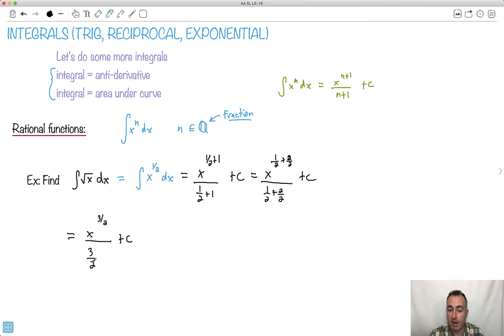What happens when I divide by a fraction? I can multiply by the reciprocal. So I'll put the 2 on top, the 3 on the bottom, and I have x to the power of 3 halves plus C. And actually, this could be the answer. I could be done.